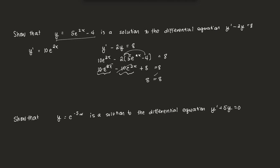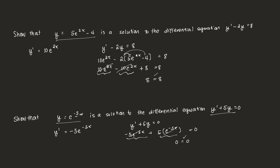Next, we have a third example. Using the laws of exponentials, we find y' = -5e^(-5x). We plug this into the ODE y' + 5y = 0: -5e^(-5x) + 5 × e^(-5x) = 0. Notice these two terms are the same and cancel out, giving 0 = 0. Indeed, this is a solution to the differential equation y' + 5y = 0. And that's a simple video on solutions to differential equations.